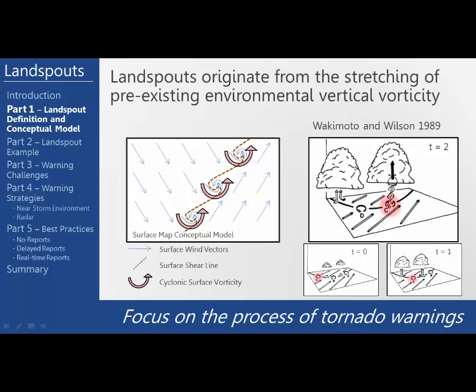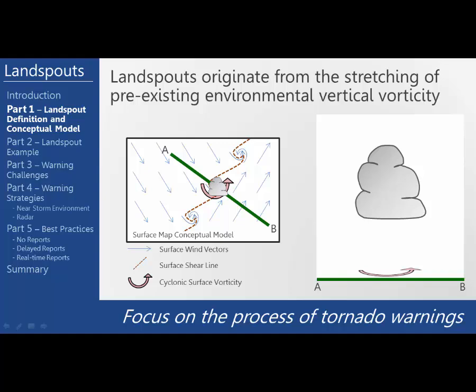Notice how the mesovortex labeled C has propagated along the boundary. Let's take a closer look at this last stage and move the cloud from their conceptual model to our two-dimensional surface map. We'll take a cross section indicated by the green line directly through the setup in order to get a better visualization of the stretching that occurs. This vertical cross section goes through one of these mesovortices as it fuses together with the updraft of a developing cumulus cloud.